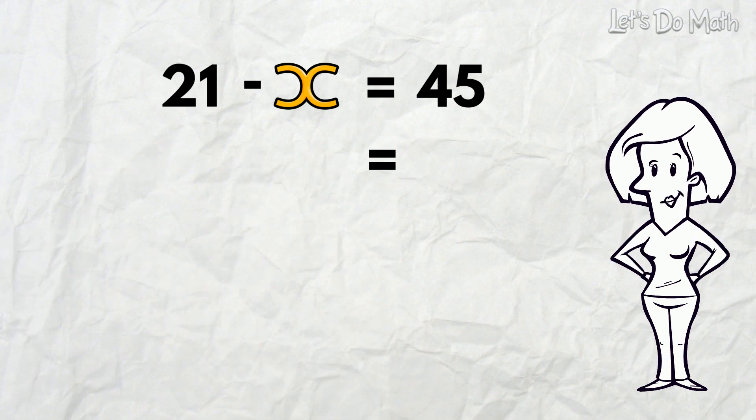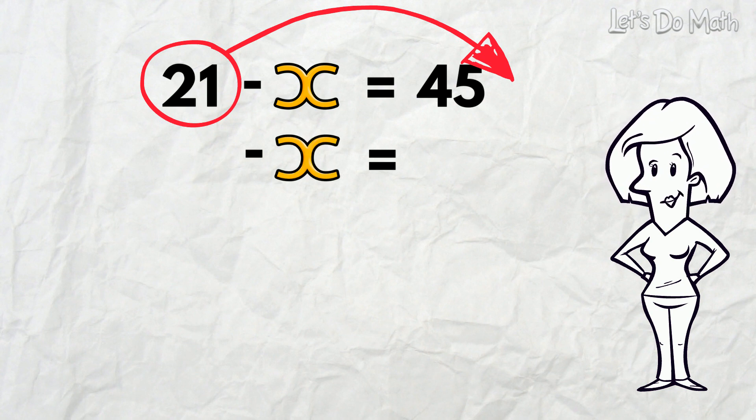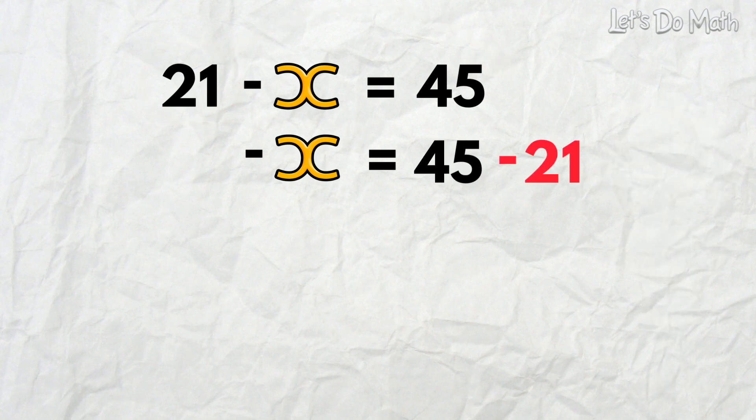This time, we're going to move 21 over to the right and cluster our constants on the right. So we get negative x equals 45 minus 21. And when we evaluate that, and we can all handle this one, we get 24. Easy!